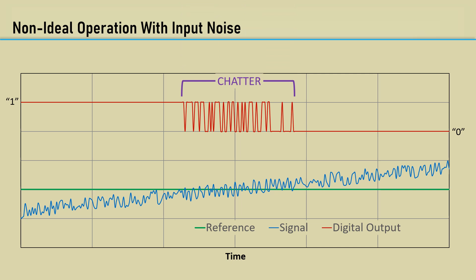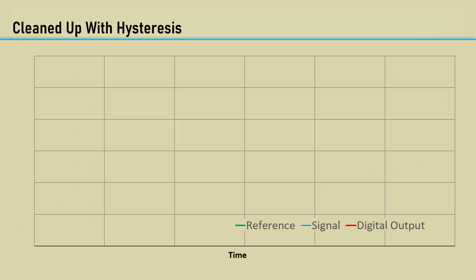but the term oscillation usually refers to an unstable system. In this case, the comparator is doing its job. Notice that every time the signal goes above the reference, the output goes low.